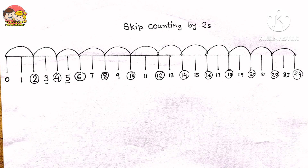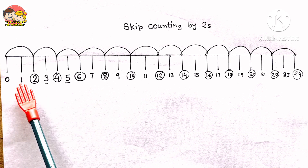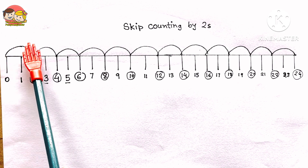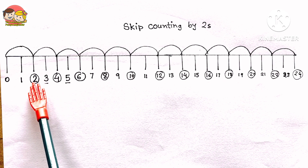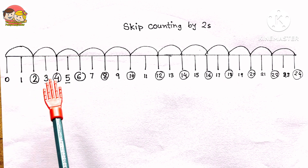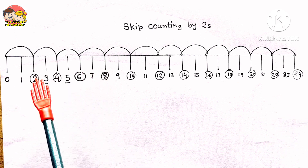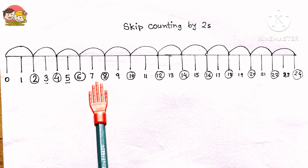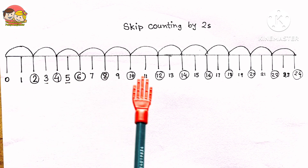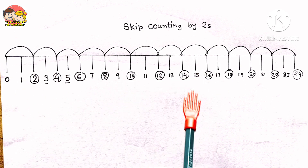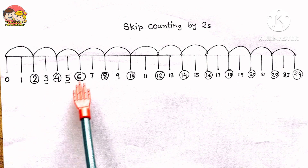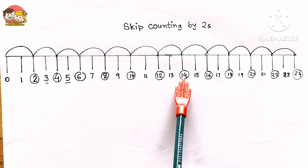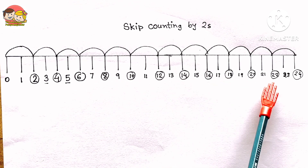The first worksheet is on skip counting by twos. Let's do a quick recap: to skip count by twos, we start from zero, skip one number in between, then go straight to the second number. We keep repeating this pattern. So the numbers are: 2, 4, 6, 8, 10, 12, 14, 16, 18, 20, 22, 24, and so on.